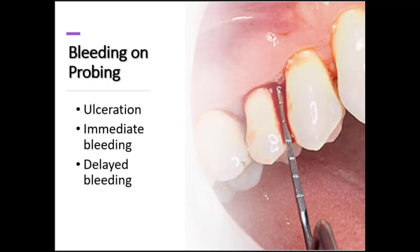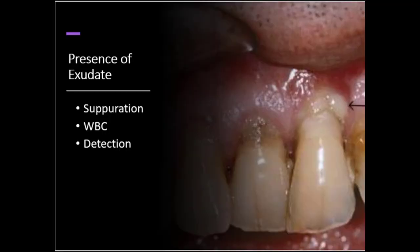Bleeding on probing occurs when the wall of the gingival pocket is ulcerated, which is why sometimes probing is painful even when you're being gentle. The bleeding can occur immediately in some cases, but we also see delayed bleeding. When you probe, it's important that you go back and look at a quadrant after you've probed and check for any delayed bleeding that may need to be charted.